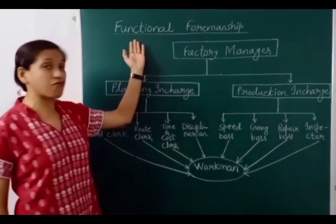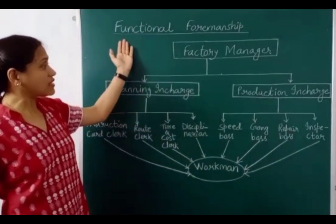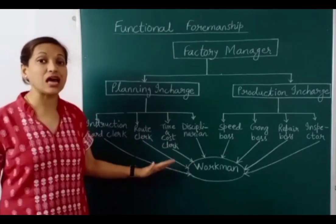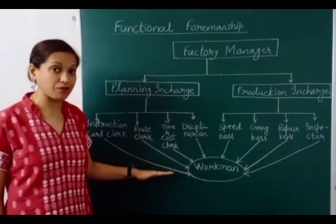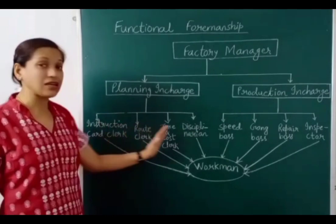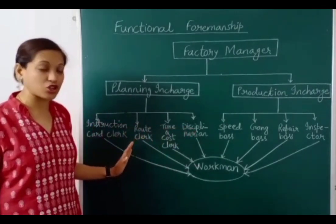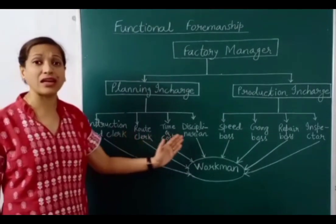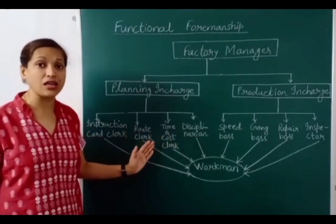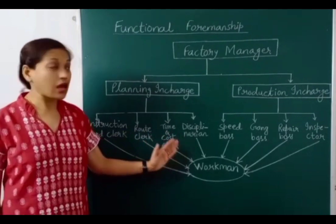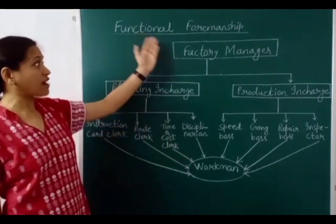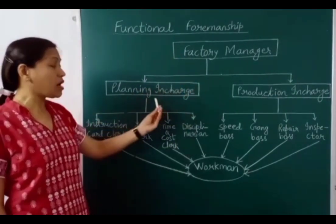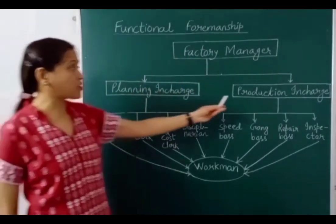Today we will study functional foremanship. Taylor conducted this study at a shop floor — the actual production area in the factory — where a foreman is the low-wage spending manager and high-wage spending worker. He takes care of entire production, planning, implementation and control. According to Taylor, in the factory there will be a factory manager who works with a planning and production team.